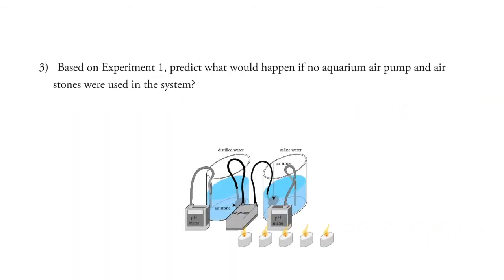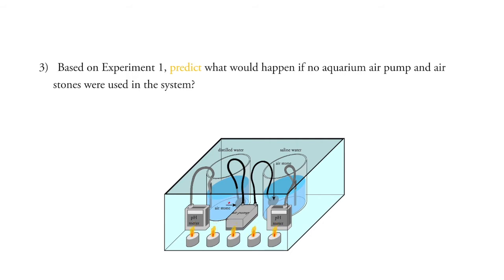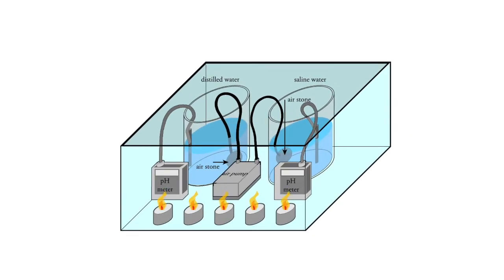So what we're asking is a hypothetical. We want you to predict if there was no air pump and air stones. Even if you don't really understand what air stones do, you can see from the diagram that there's an air pump pumping air. What we're doing is putting carbon dioxide into the air and then pumping that into the water.